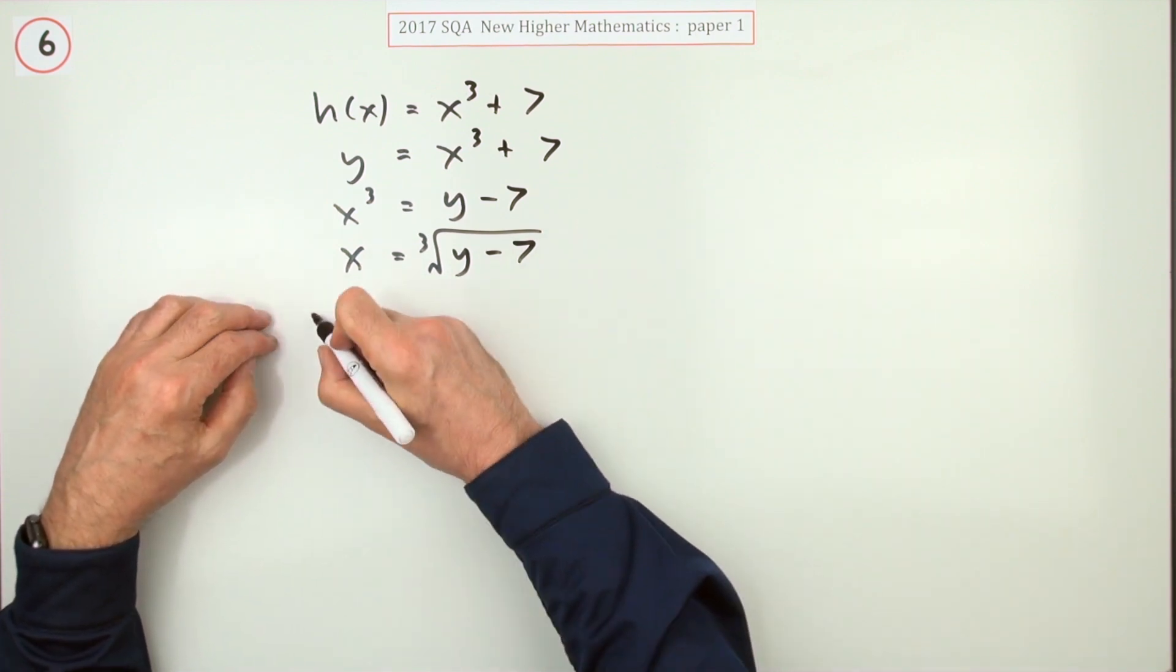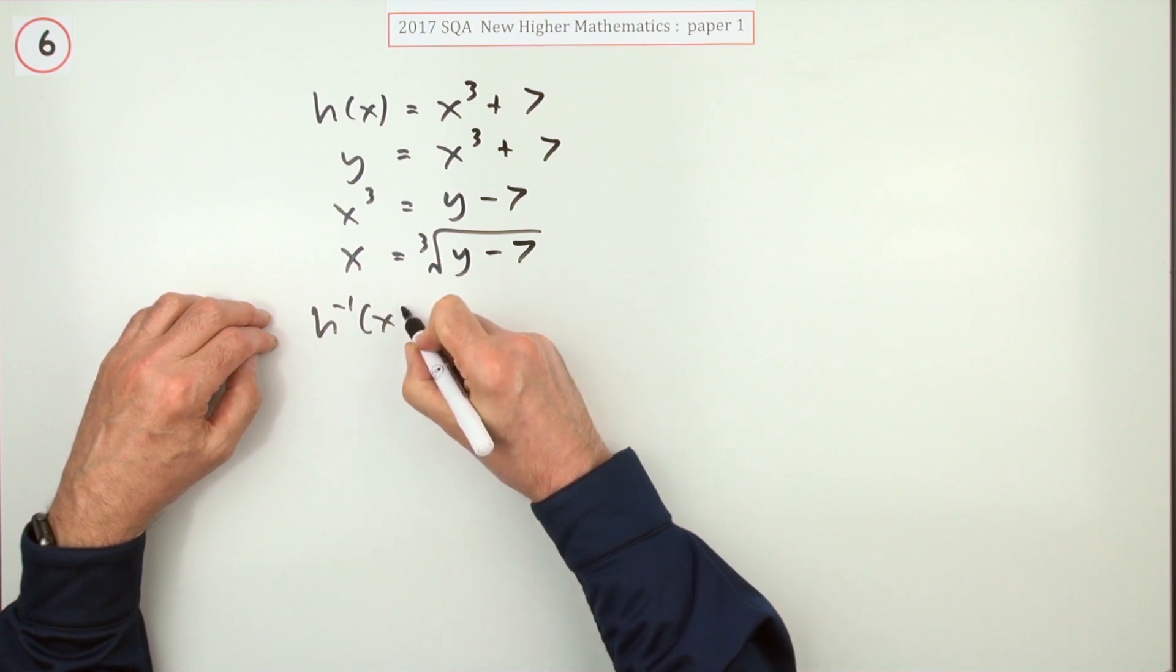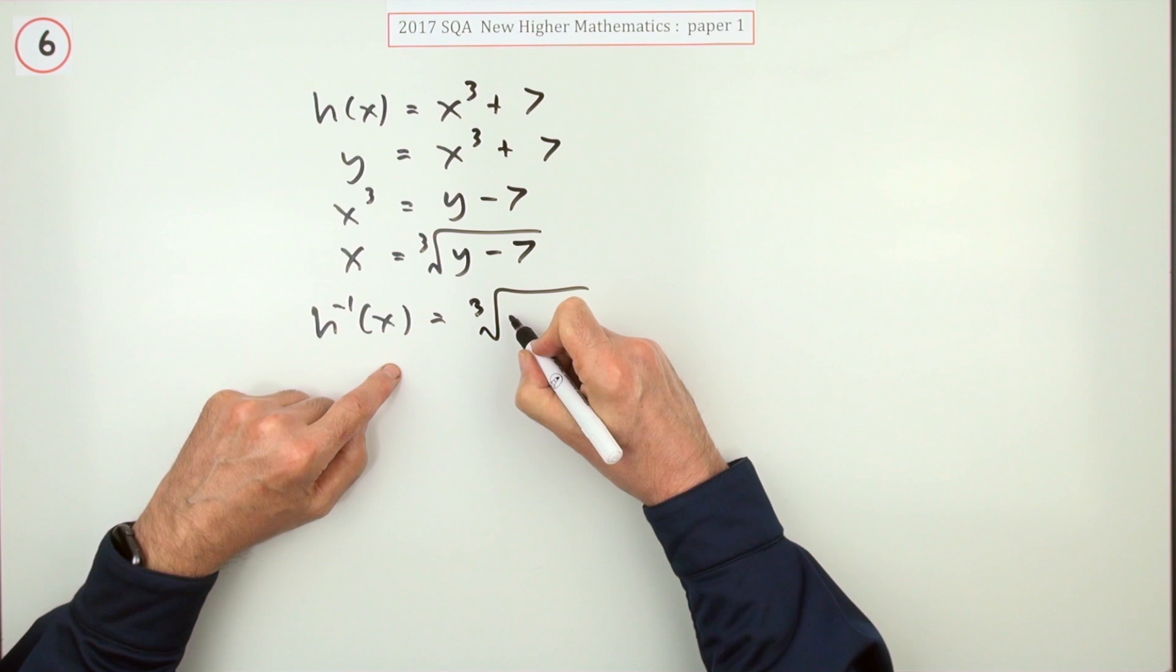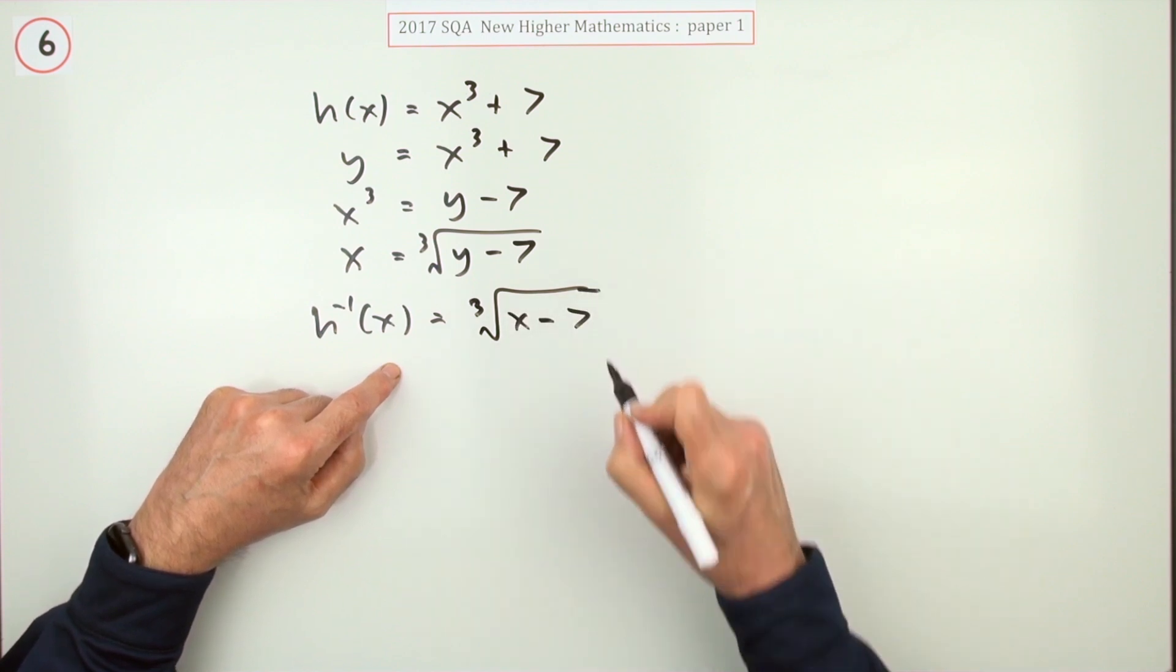Now it should really say inverse of h acting on y is found by taking this expression, but normally you say a letter is a letter, so I'll just rewrite it as: the inverse function acting on x would be the cube root of x minus 7.